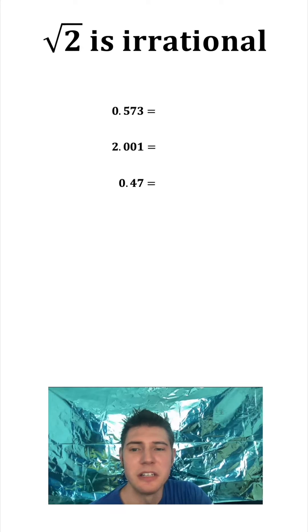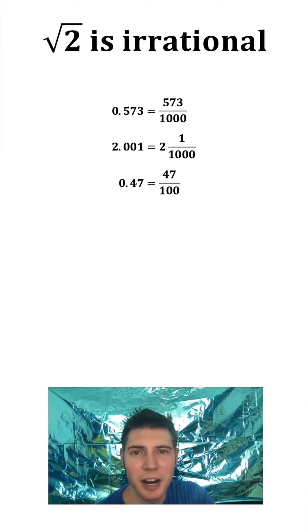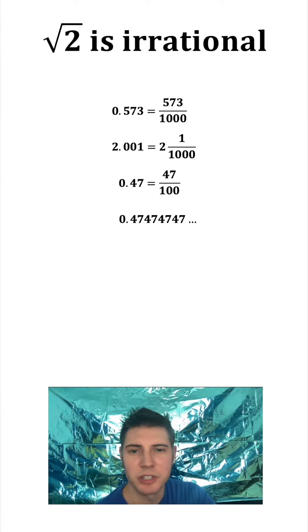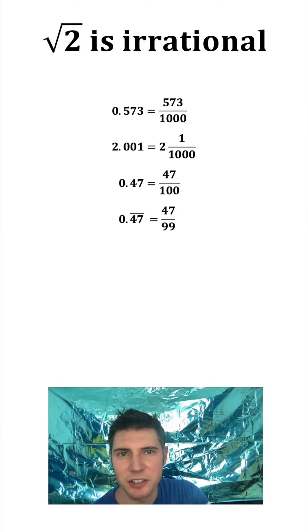Well, there is a way we know that. So first off, if it does terminate, it can be expressed as a fraction. That's what rational means, it's a ratio. And if it does repeat, like 4-7 repeating, that can also be expressed as a ratio.